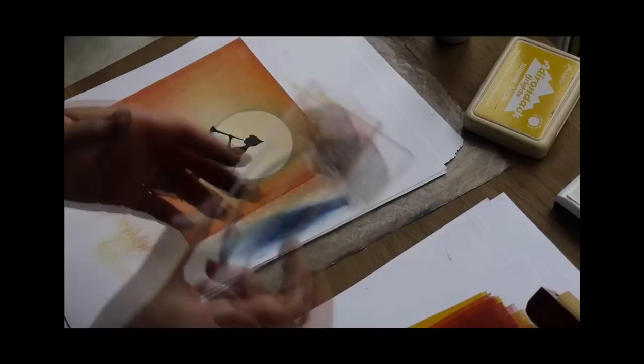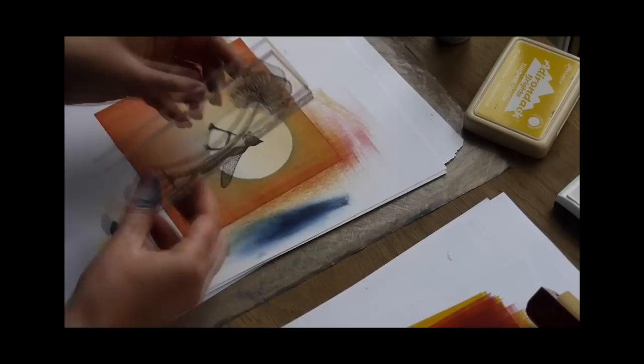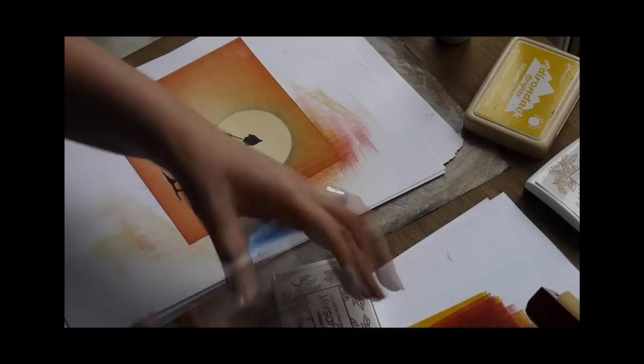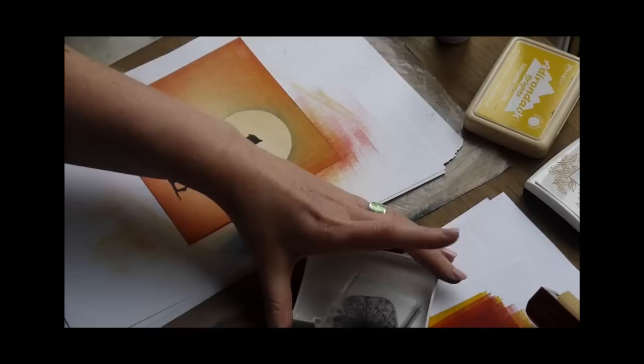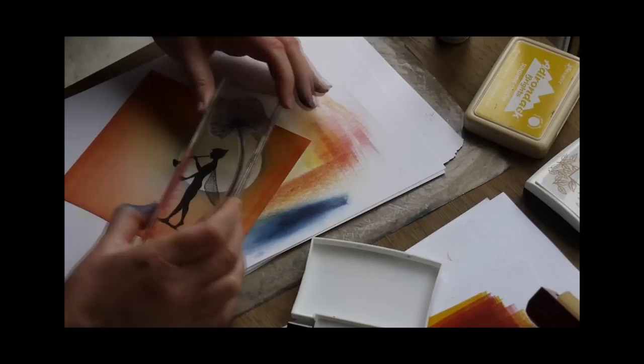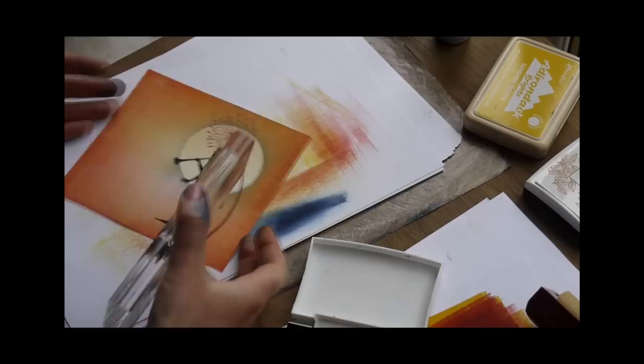And now moving on to the dandelion, all I've done here is slightly bend the stem because we want to put that over the top. So, inking it this time in the crimson red and then we're just going to simply bob that down over the top, just above the fairy's head. Give that a good press down.